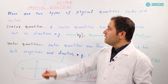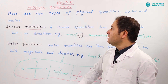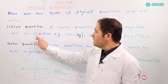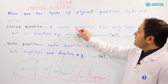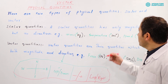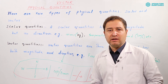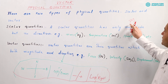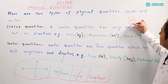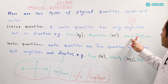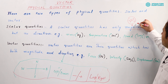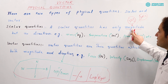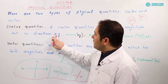Now, what is a scalar quantity? A scalar quantity has only magnitude but no direction. The word 'magnitude' can create problems for students — magnitude means a number with a unit. For example, 3 meter per second: this number and this unit combined is called magnitude.